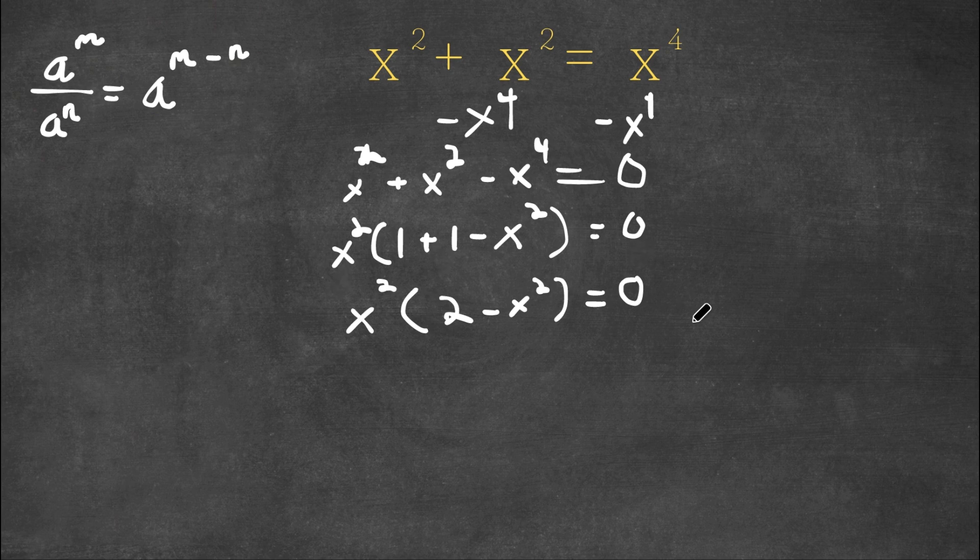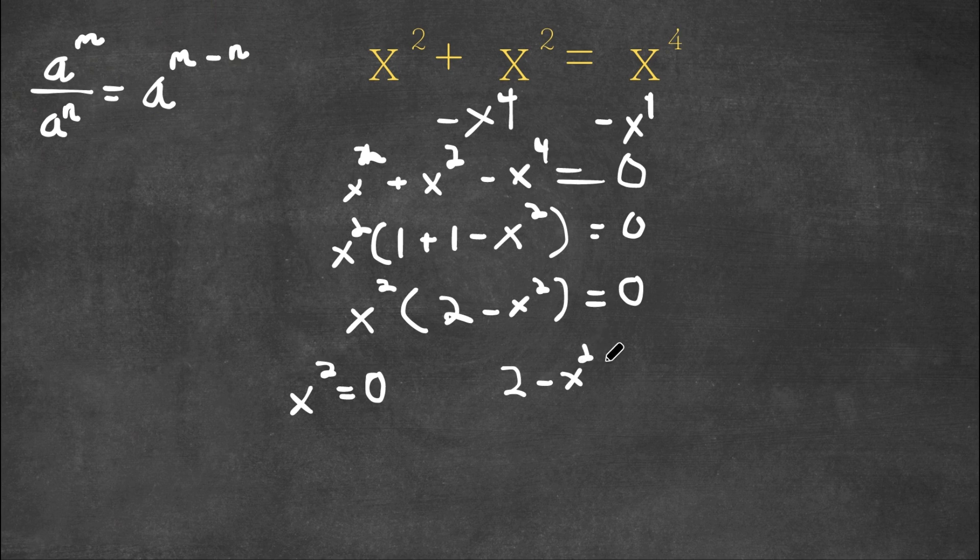And now this gives us two equations. Our first equation is x squared is equal to 0. And our second equation is 2 minus x squared is equal to 0.